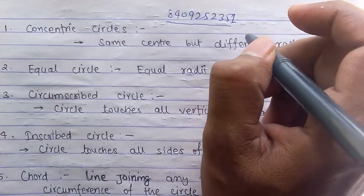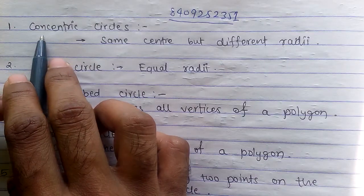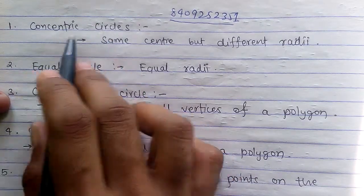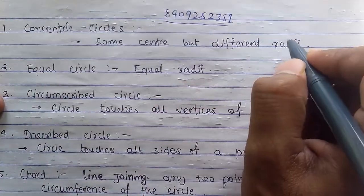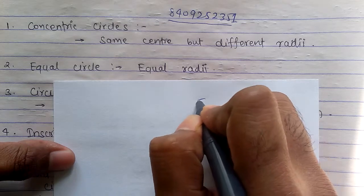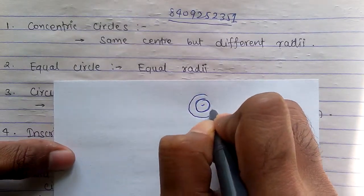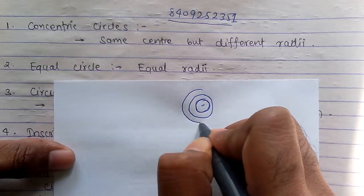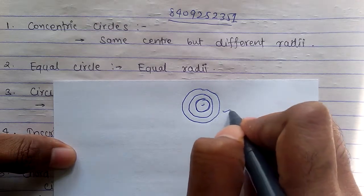Point number one: Concentric circles. What is that? Same center but different radius. The center is same but the radius - this is a circle, and this is another circle with different radius. This is the third circle with larger radius. This is called concentric circle.